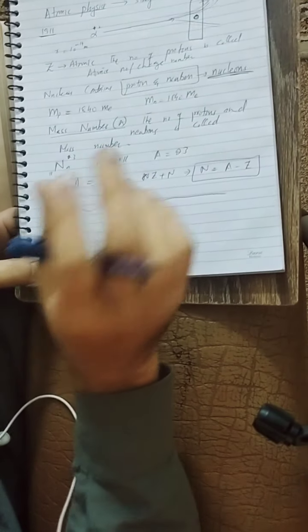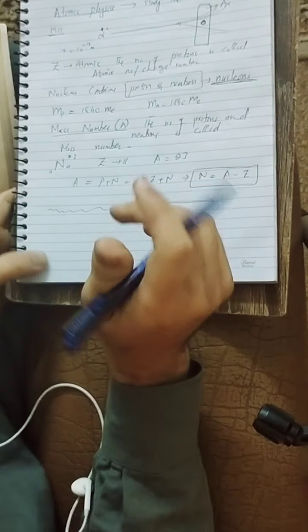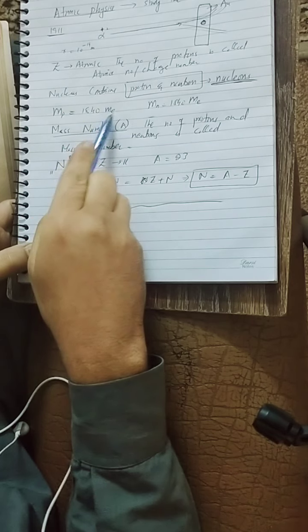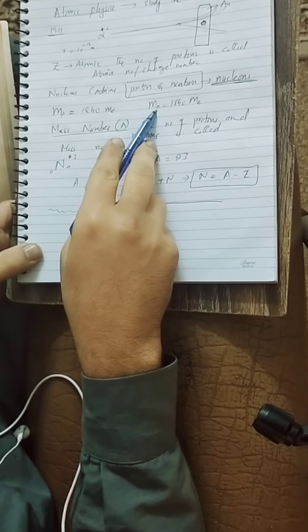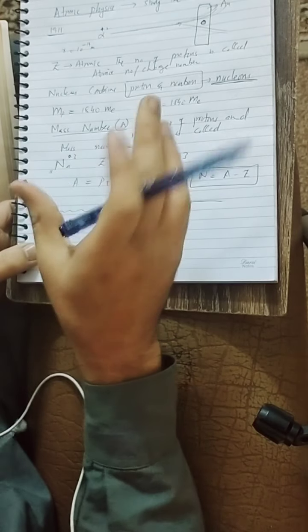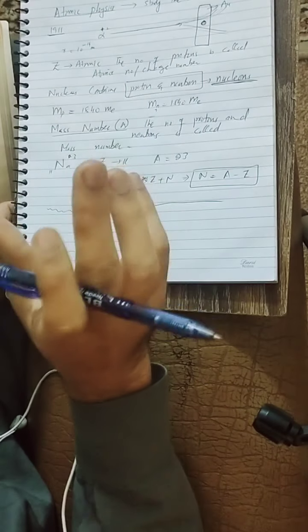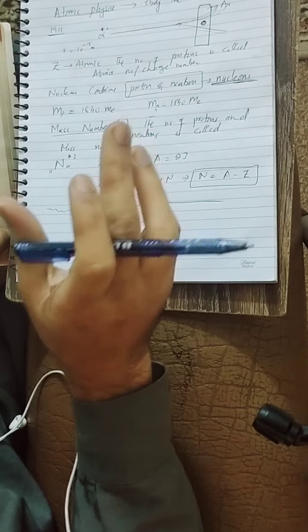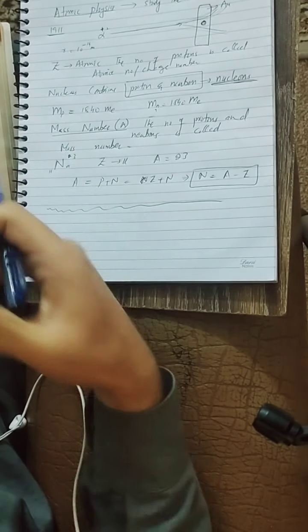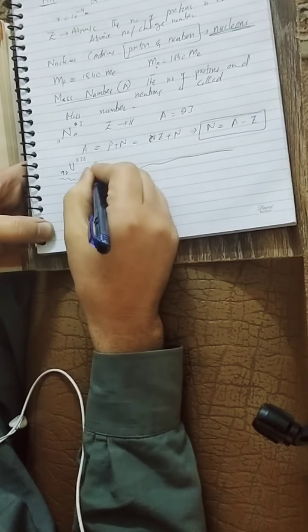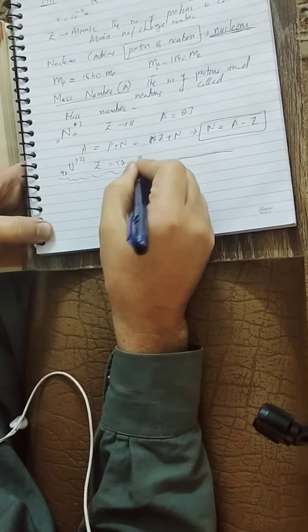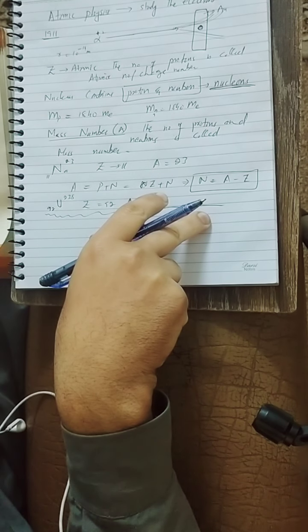The total mass of the atom is concentrated within the nucleus because the mass of the proton is 1840 times greater than the mass of the electron, and so is the mass of the neutron. Protons and neutrons are very heavy particles, so the mass of the electron is negligible compared to them. For example, uranium consists of 92 protons and 238 nucleons. So the charge number is 92, the mass number is 238, and the neutron number is 143, found by subtracting 92 from 238.